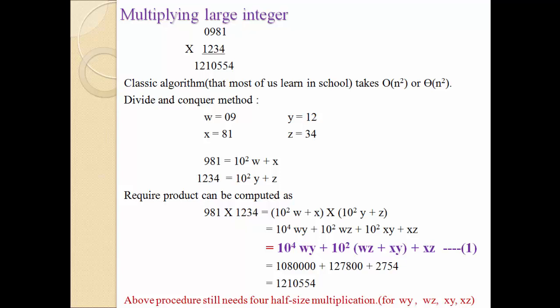The total time complexity of the classic algorithm is O(n²), or Theta(n²). If the number of digits is 4, the total multiplications required is 16. If the number of digits is 5, then 25 multiplications are required.